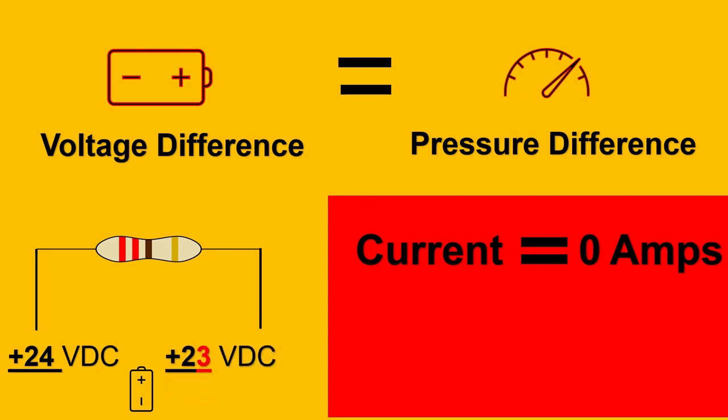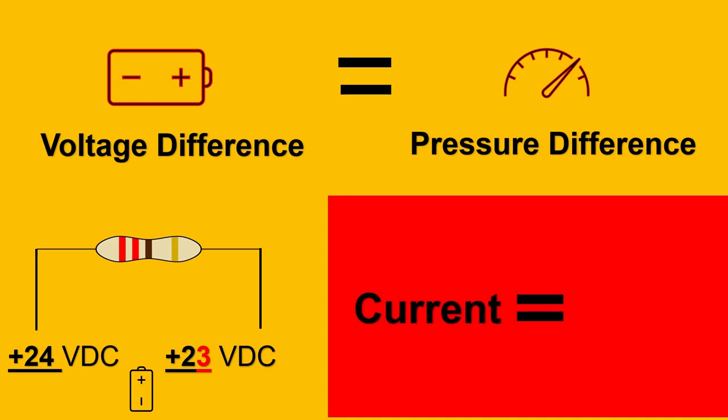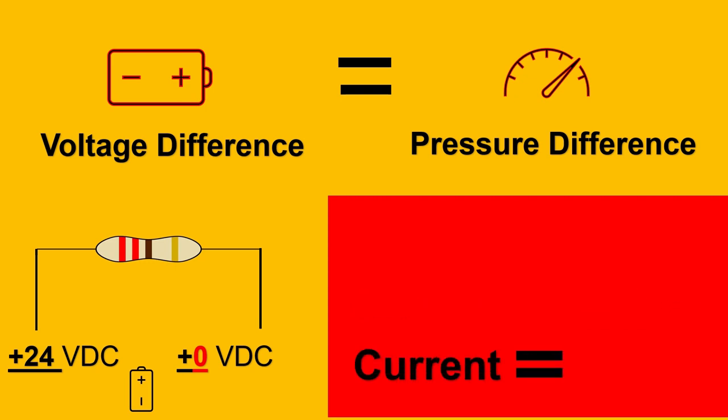However, what if I reduce the voltage on its other side? What will happen to the current now? It will increase. And what if I keep reducing the voltage at the other side? The current will keep on increasing. And what if I keep it to 0 volt DC? Now if you see the current, that will be maximum amperes which will be flowing through the circuit.